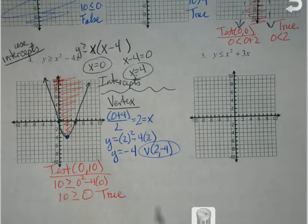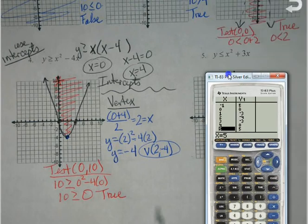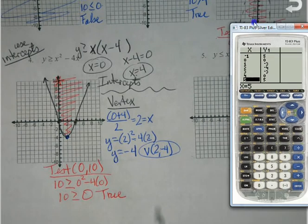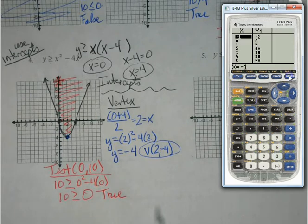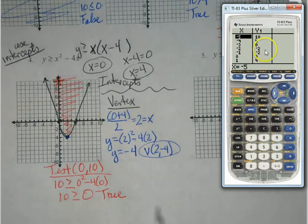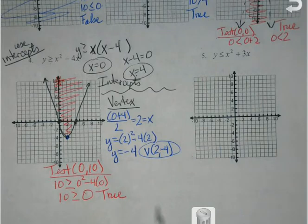For those who say they want to just use the calculator, I want to show you why that can burn you every once in a while. Notice here we've got x squared plus 3x. If you go through looking for symmetry, you might see some — but you don't have a middle number, you don't have a vertex. You can't have this sloppy, funky-shaped parabola, which tells me the vertex might not be a nice number.